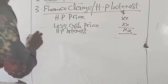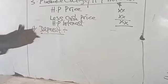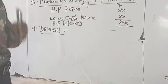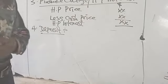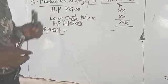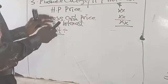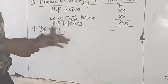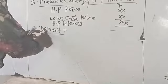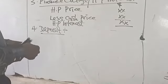Number four: the Deposit. Deposit is the initial sum payable by the Hire Purchase Buyer at the inception of the Hire Purchase transaction. For example, if the Hire Purchase Price is ₦1,000,000, the buyer may pay ₦50,000 outright — that ₦50,000 is the deposit. You are then left with ₦950,000 still to be paid.